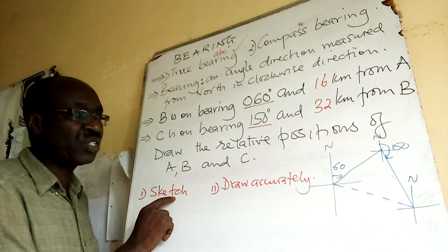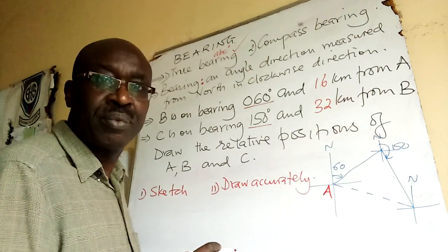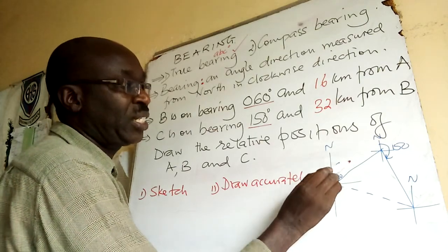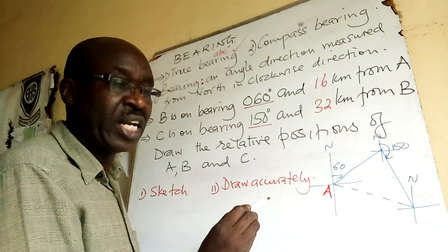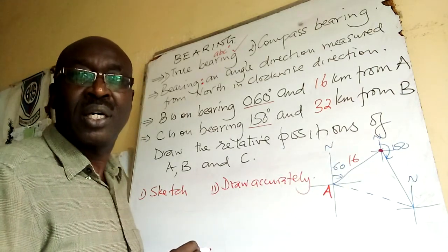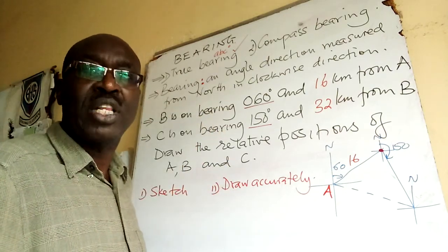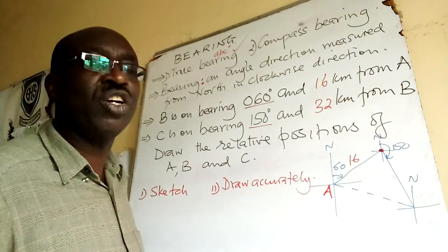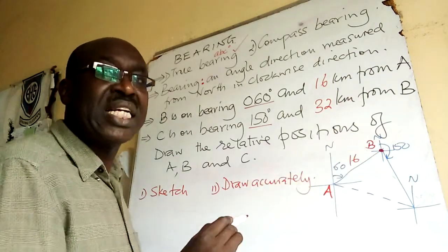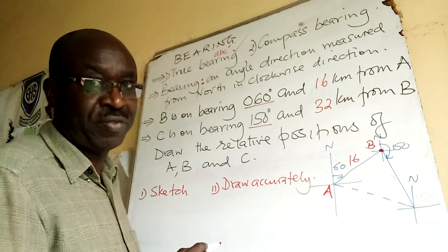So roughly, I've done it here. This is A. So we measure from north 60 degrees. Then that is the direction of B. And how far is B from A? 16 kilometers. So that is our point B. At B, you also have to draw a compass so that you are able to get the direction of C.